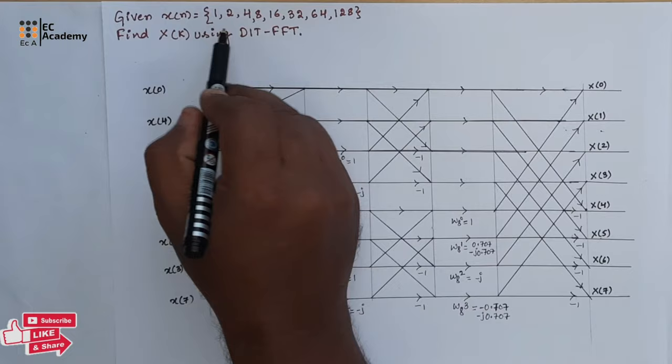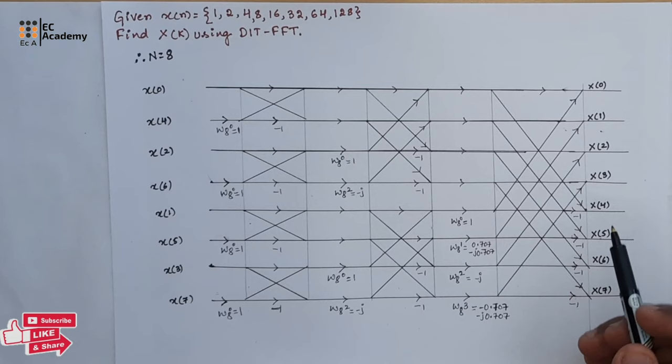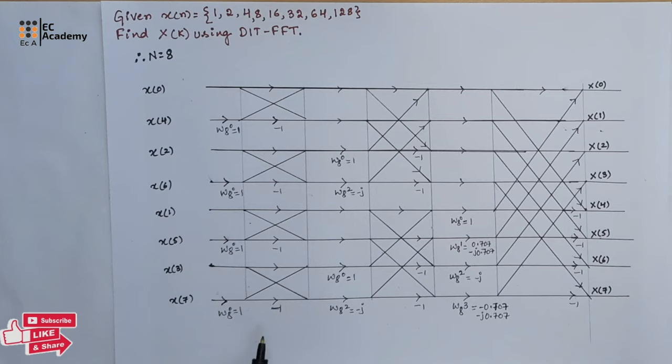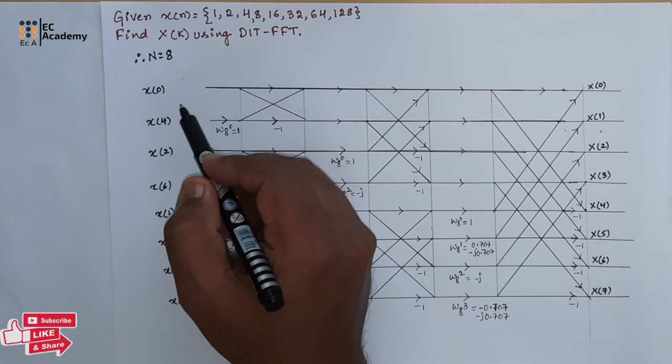The number of samples in x of n is 8, therefore we take N equal to 8. Before doing any calculations, we need to draw the butterfly diagram or signal flow diagram for N equal to 8. This is the standard signal flow diagram for N equal to 8. The order of the time domain signal is decimated, which is why it is known as decimation in time.